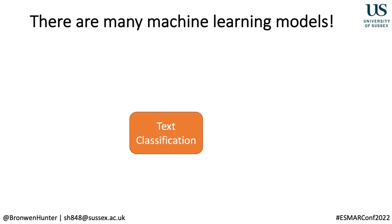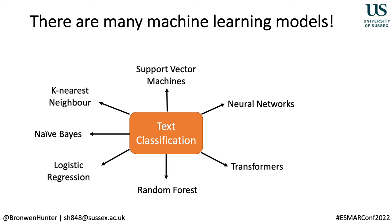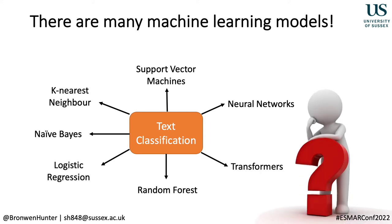There are many different machine learning models we can use for text classification: random forest, logistic regression, naive Bayes, k-nearest neighbour, support vector machine, and then some deep learning based methods like neural networks and transformers. Given the number of different models available, it can be difficult to know which one to use. Today I'm going to be talking particularly about transformers, and hopefully I can convince you that even though these models are quite complex, how we use them is actually a conceptually appealing approach.